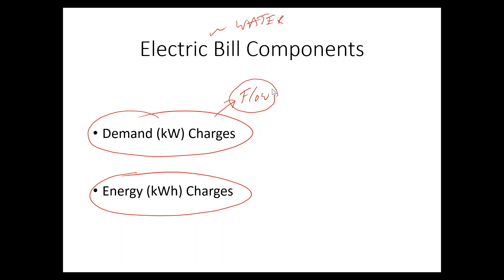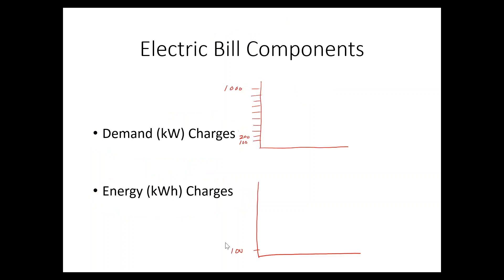Going back to electricity, demand is the flow of electricity — it's a rate, also called power. It's energy per unit time. The greater the flow you have, the more the utility is going to charge you. Energy, the kilowatt-hour side, is more like the volume, as mentioned before.